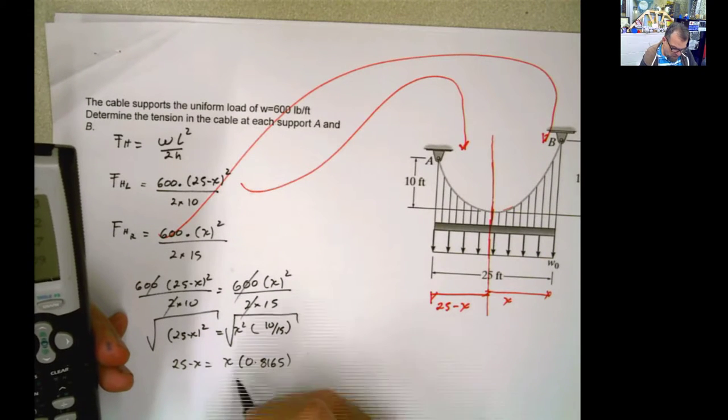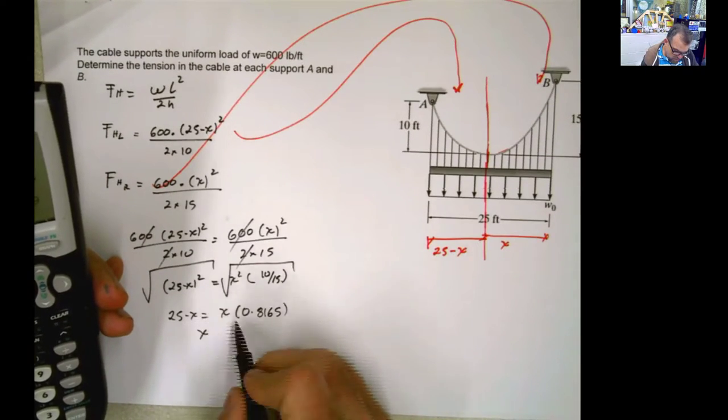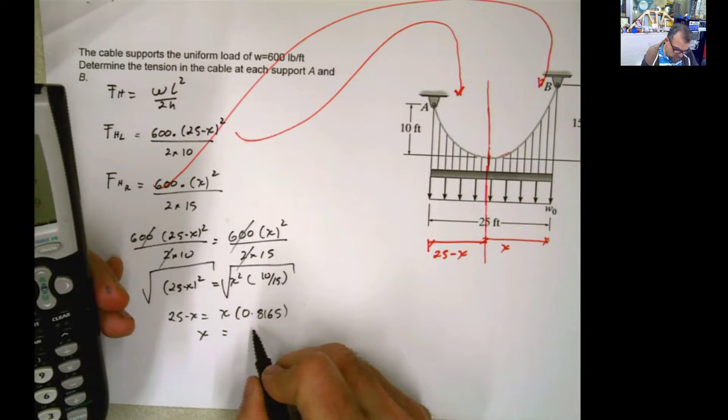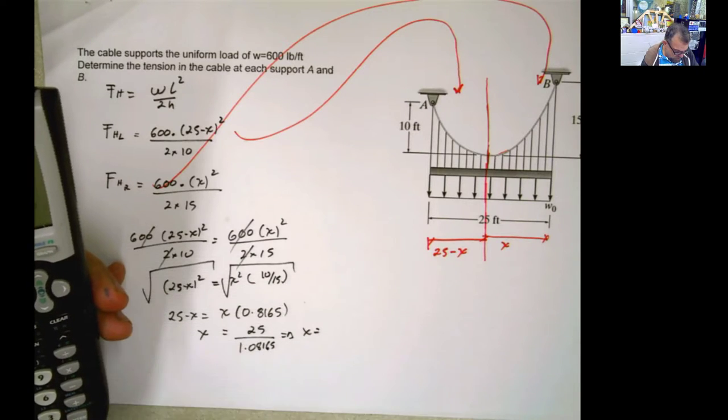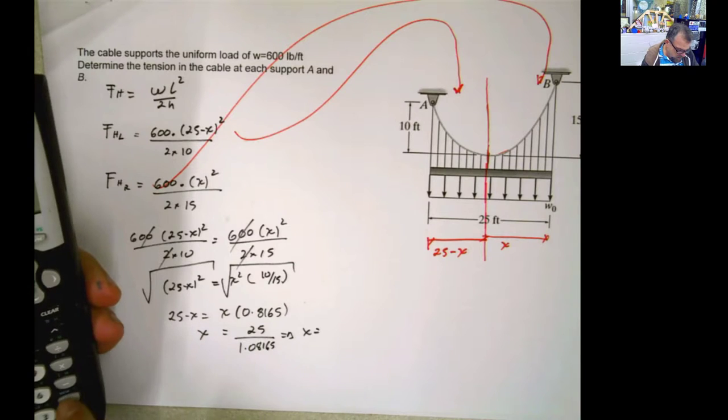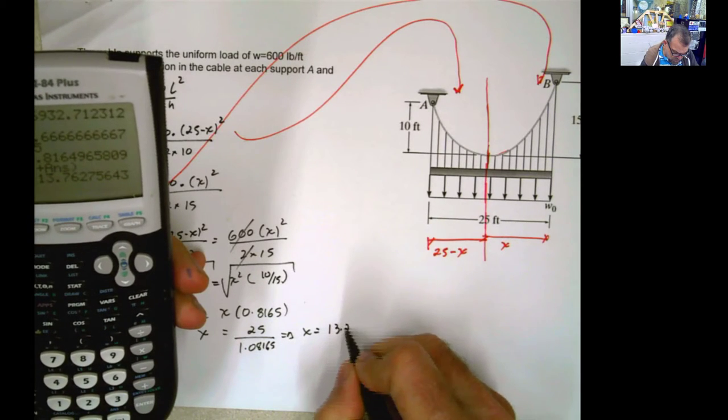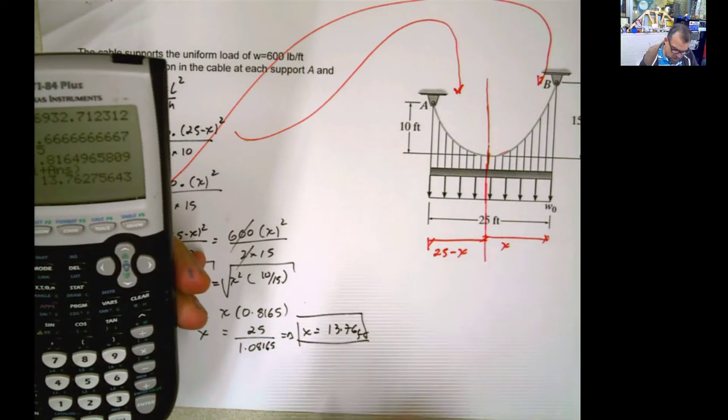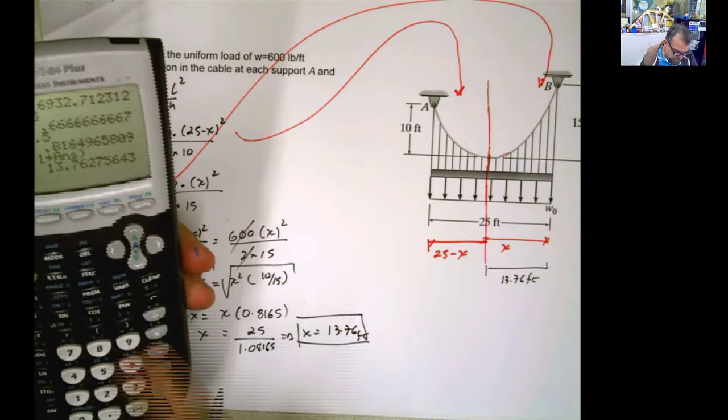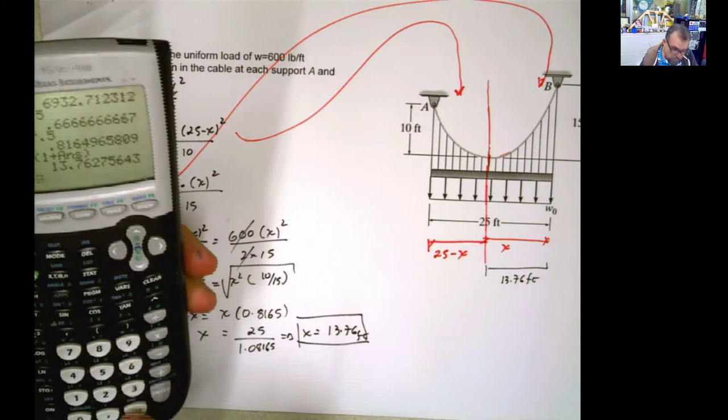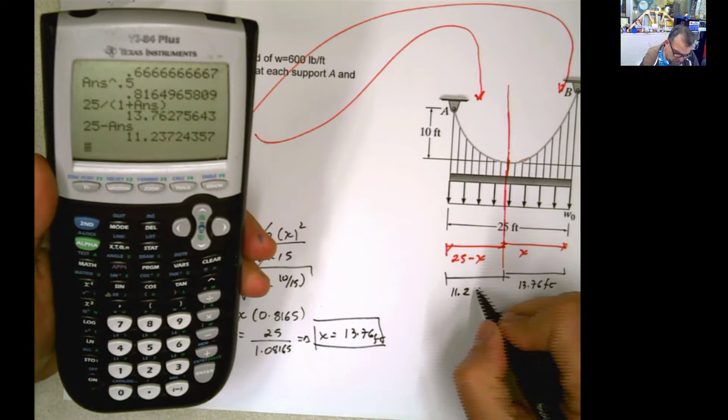So it's 0.8165x. And then I can combine my x together. Combining the x's, that's not good, combining the x's. So let's solve this for x, pass this to the other side, 25 divided by 1.08165. And that means that x is going to be equal to 25 divided by 1 plus, x equals 13.7, 13.76 feet. There you go. So this side then is going to be 13.76 feet, and this is going to be 25 minus that, 11.24 feet.